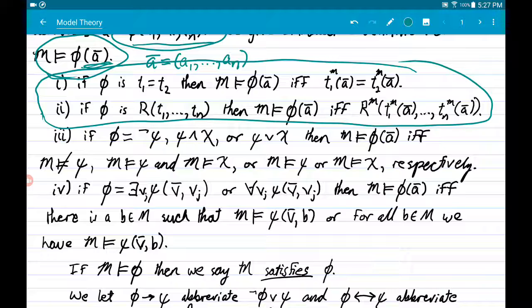If the formula is an equation of two terms, then the structure satisfies that sentence if and only if those two terms map to the same element in the domain. So this is an actual element out of the domain, and so is this. And if they are equal in the domain...